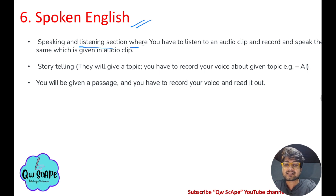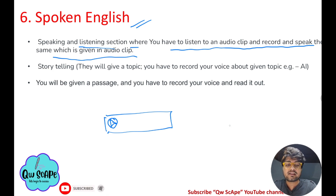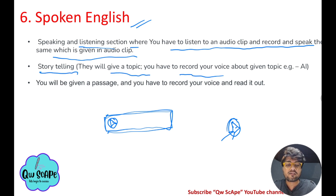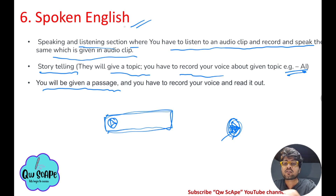For spoken English, there will be listening and speaking tasks. You will be given an audio clip — listen carefully, then click the record button and repeat what was said. They will also give a storytelling task: you'll receive a topic, such as artificial intelligence, and need to record yourself speaking on it for at least 30 seconds to one minute. Additionally, you will be given a passage to read aloud and record your voice.